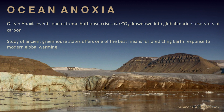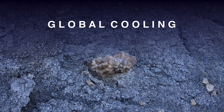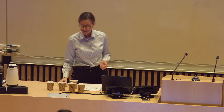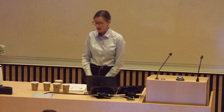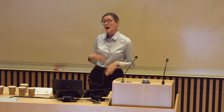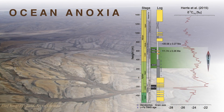Studying ancient greenhouse states offers one of the best means for predicting the Earth's response to future warming. I talked about global cooling events — this mineral is called a glendonite, and it's one of the ways we know these transient cooling events occurred during or following the ocean anoxic events. It's thought to only form when marine conditions are near freezing. I brought a sample today — I collected it from the Glacier Fjord locality myself, and it's about 120 million years old. Further up in the rock record at Glacier Fjord, we see these events happening again: carbon cycle perturbations associated with the Large Igneous Province, ocean anoxia, and transient cooling.